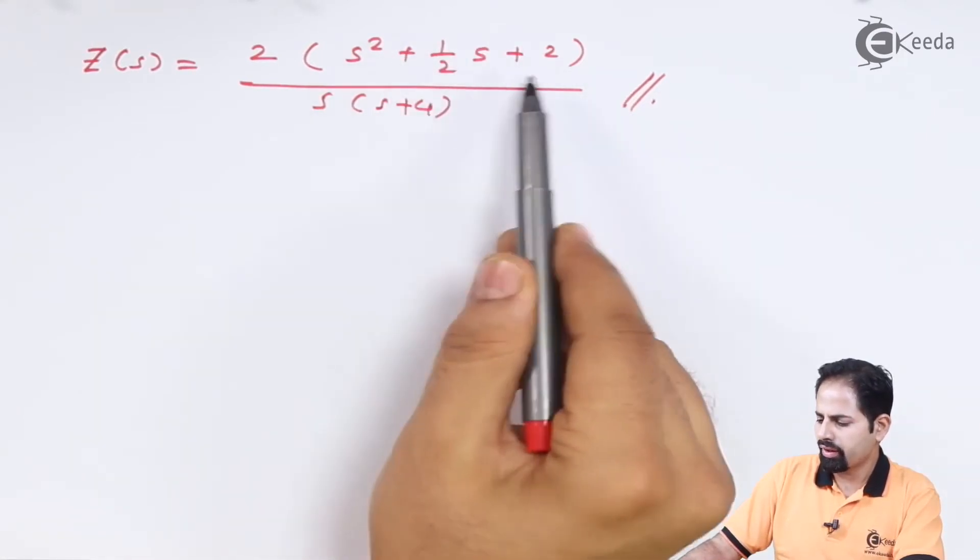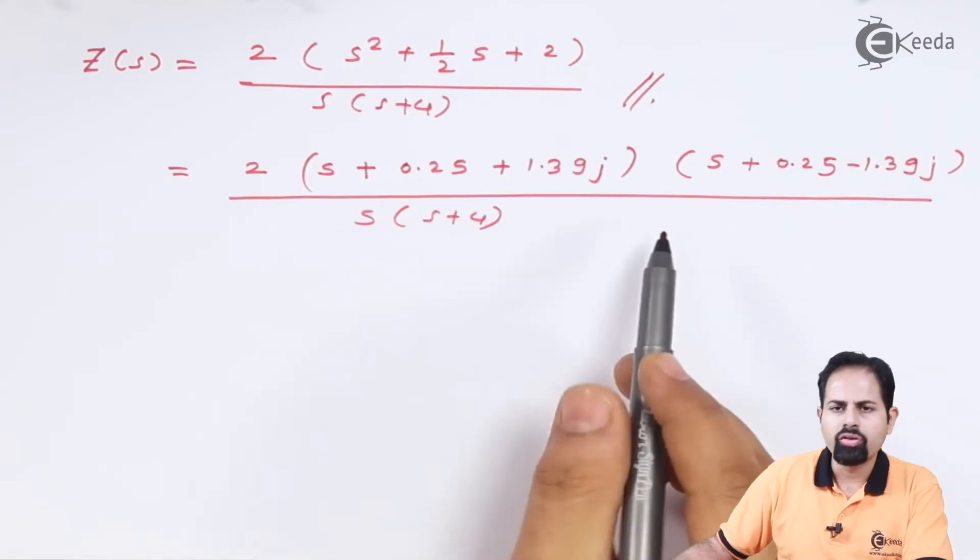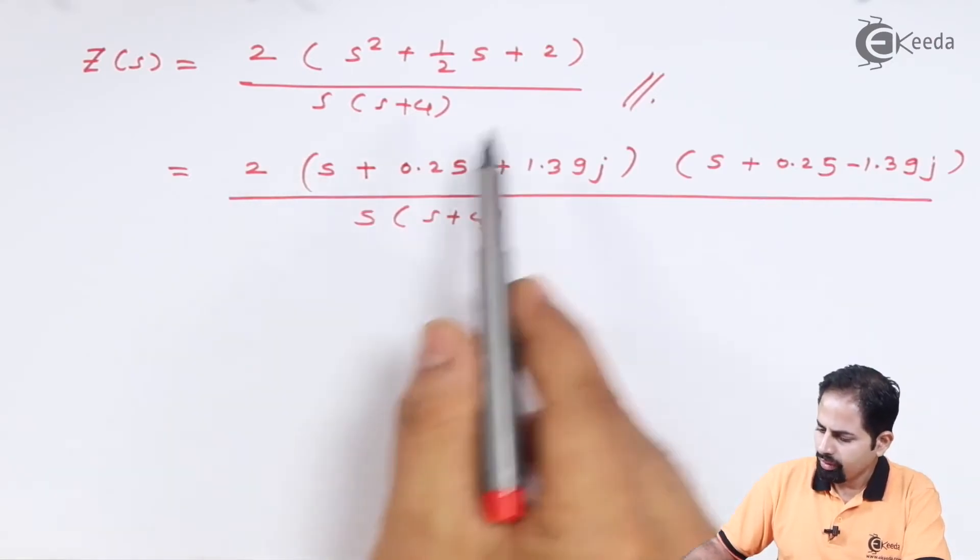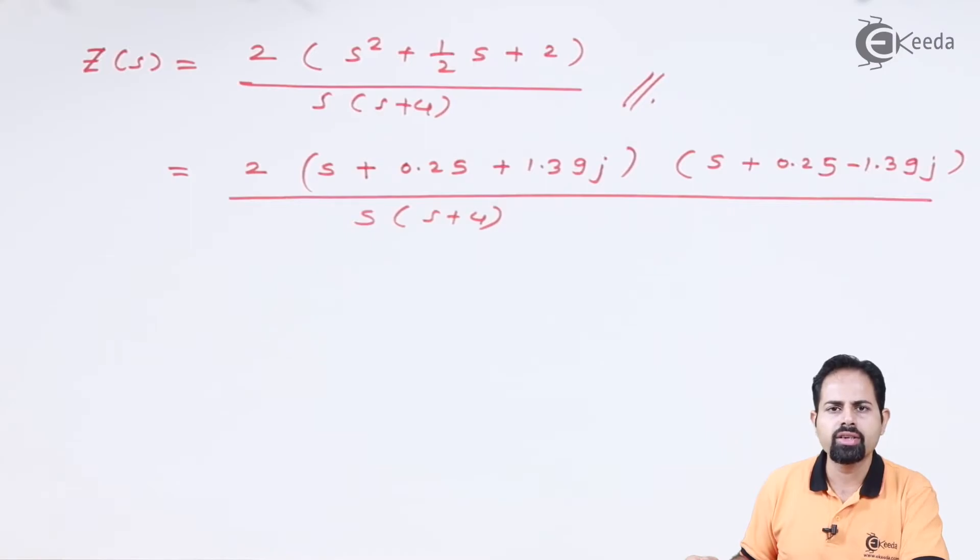Now we have to factorize this. So we will take the roots of this numerator. We have factorized it. This numerator polynomial is having complex roots.